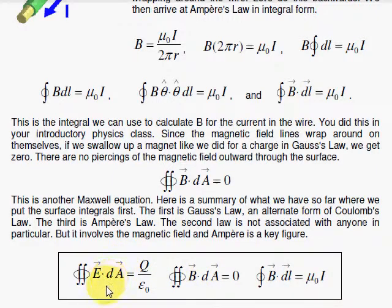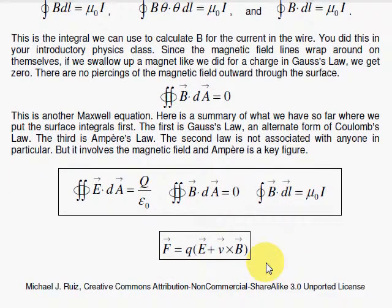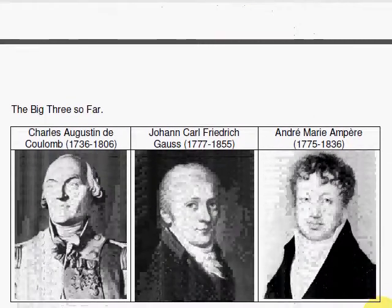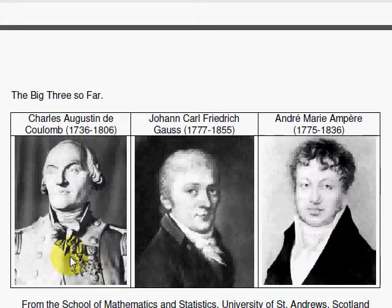So here you have Gauss's law, no magnetic monopoles, and Ampere's law. And here's our Lorentz force that we saw earlier, how a charge responds to electric and magnetic fields. Notice that you have to be moving to experience the magnetic field. And here are three pictures of three scientists: Coulomb, Gauss, and Ampere.